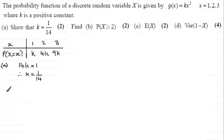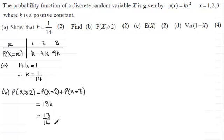Now for part (b), we've got to work out the probability of X being greater than or equal to 2. That's just a simple case of adding up these two probabilities. It will be the probability that x equals 2 plus the probability that x equals 3. So that's a total of 13k. And knowing that k equals 1/14th, 13 times 1/14th gives us 13/14ths. Let's move on to part (c).